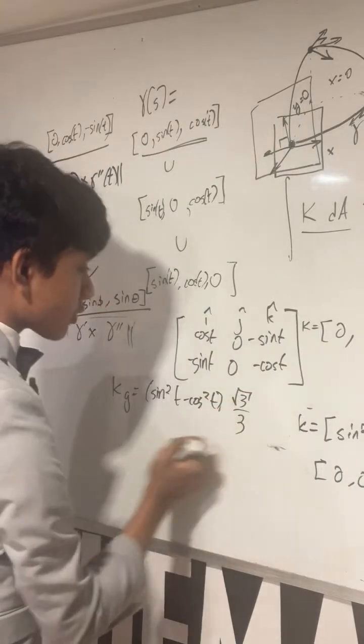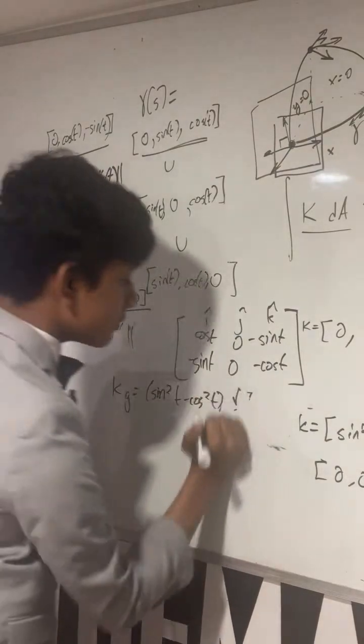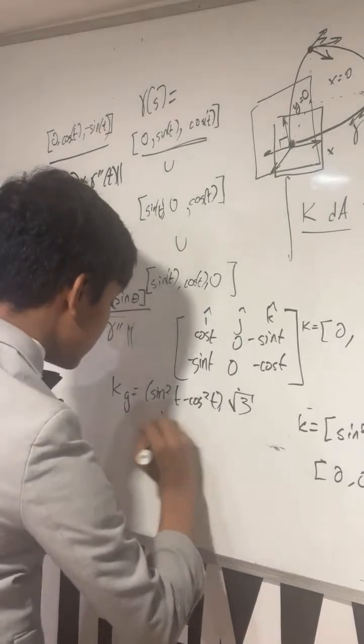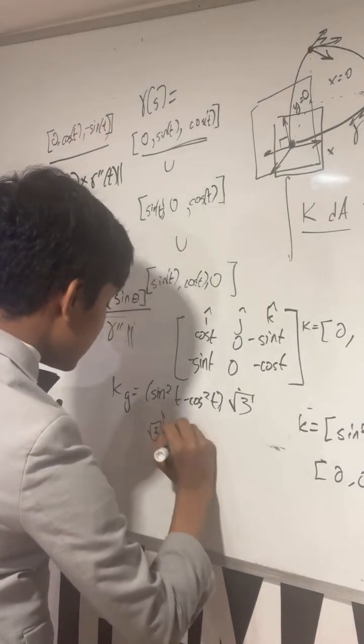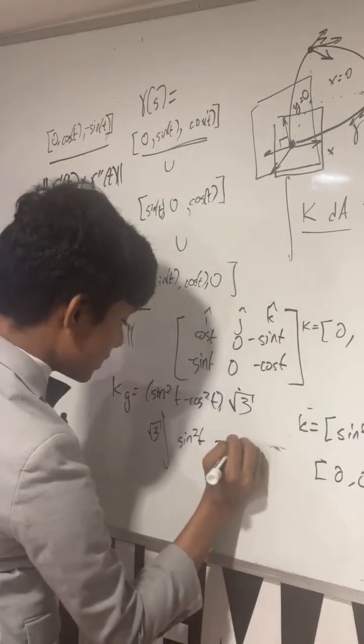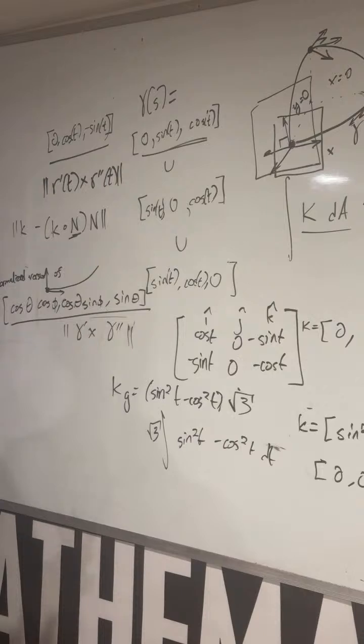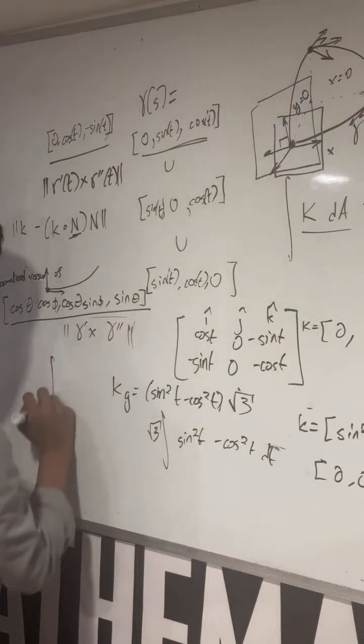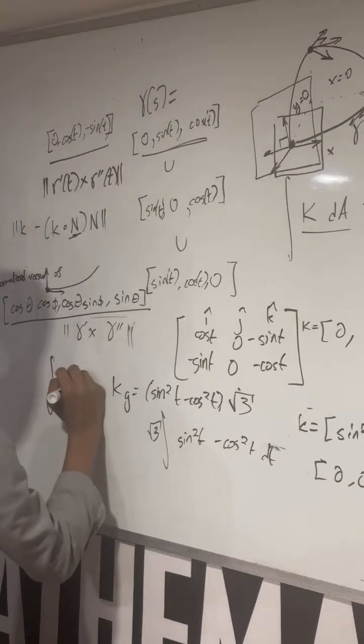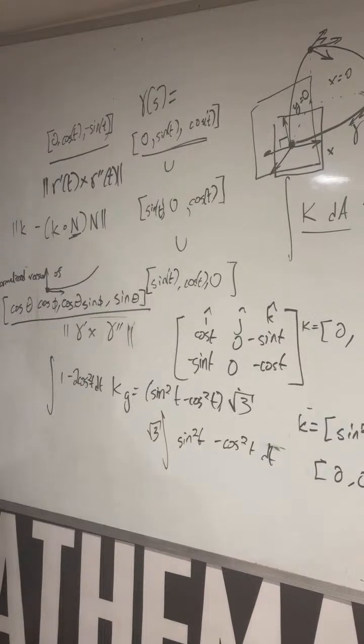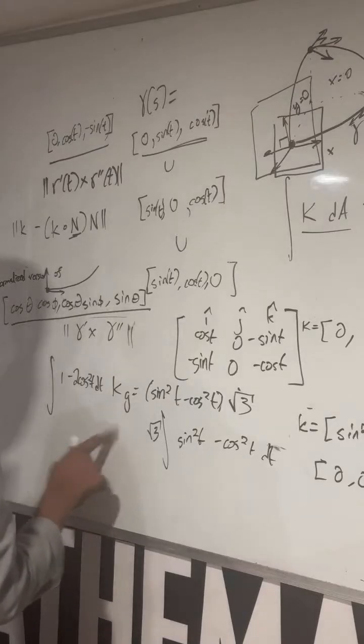So when you take the integral of that you get the square root of 3 times the integral of sin square t minus cos square t dt. Well, you get 1 minus 2 cos square t dt and from there I think I have to do that part. You know what? I'll just leave it here because I don't want to do it anymore.